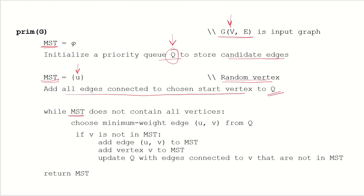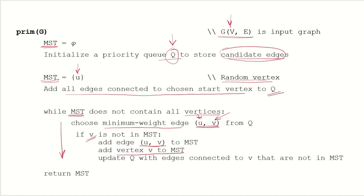All the edges connected to this start vertex are added to Q. Then, until the MST contains all the vertices of the input graph, we do the following: choose the minimum weight edge UV from Q, and if vertex V is not in the MST, add edge UV and vertex V to the MST. Then all edges connected to this newly added vertex are added to the priority queue Q. Once all vertices are included, we return the MST.